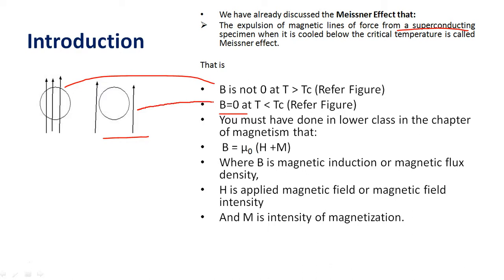Then it becomes a superconductor. You must have done in your lower class, in the chapter of magnetism, there is a relation that B equals μ₀(H + M), where B is magnetic induction or magnetic flux density, H is applied magnetic field or magnetic field intensity, and M is intensity of magnetization.